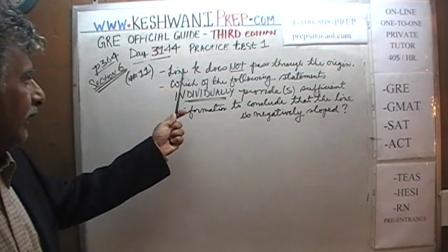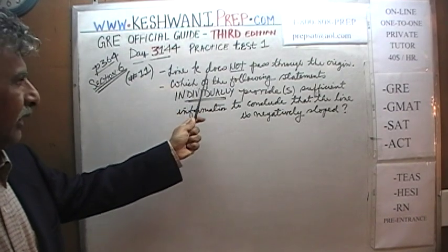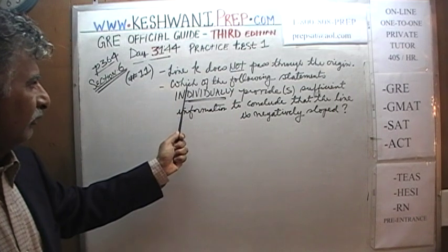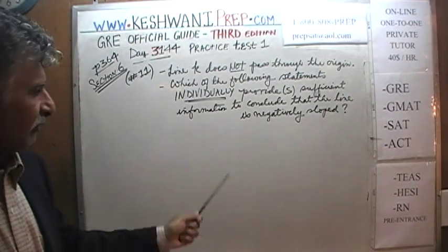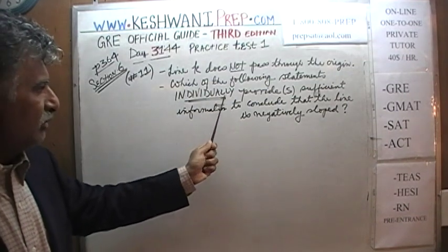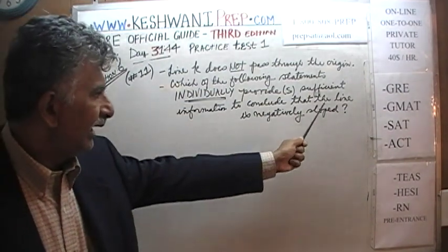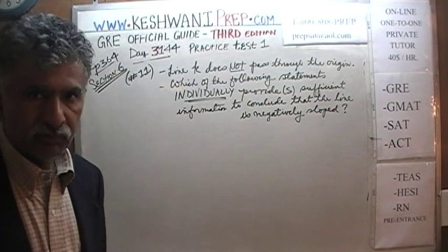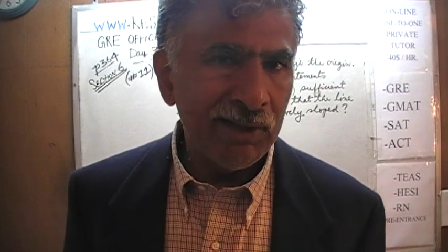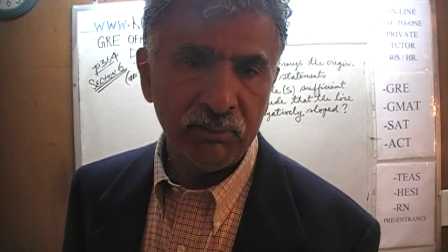It says that we have a line K. We are told that it does not pass through the origin. The question simply is: which of the following statements — they are going to give us three statements — which of the following statements, individually, provides sufficient information for us to be able to conclude that the line in question is negatively sloped? Let's begin.